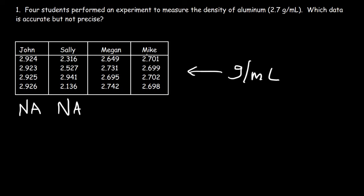What about Megan? Relative to John and Sally, Megan's data is pretty close to 2.7 — values like 2.649, 2.73, and 2.695 are very close to the accepted value, so we can say her data is fairly accurate. And Mike's data is definitely accurate — it's very close to 2.7.